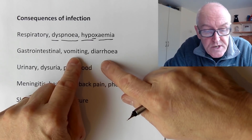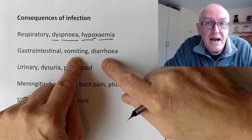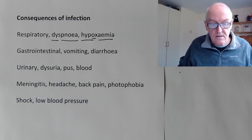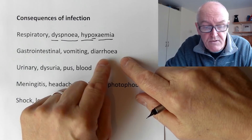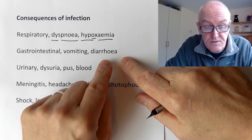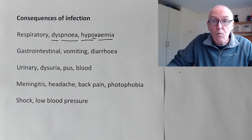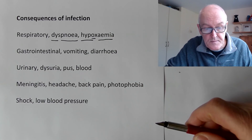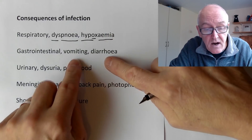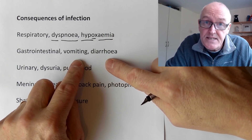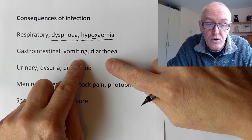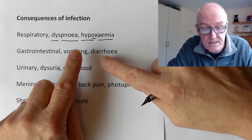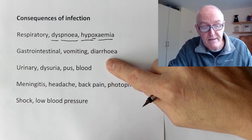Both vomiting and diarrhea are actually good responses - if you swallow toxic bacteria or viruses and you vomit them out, they are then out of the body. Or if you've got infectious bacteria or viruses in your colon, in your large bowel, and you have diarrhea, then that washes them out of the body. These are good natural flushing effects - consequences, but they are good. They can become problematic if you lose too much fluid, salt, or potassium, and we might have to think about replacing those. But they are basically self-defense mechanisms.